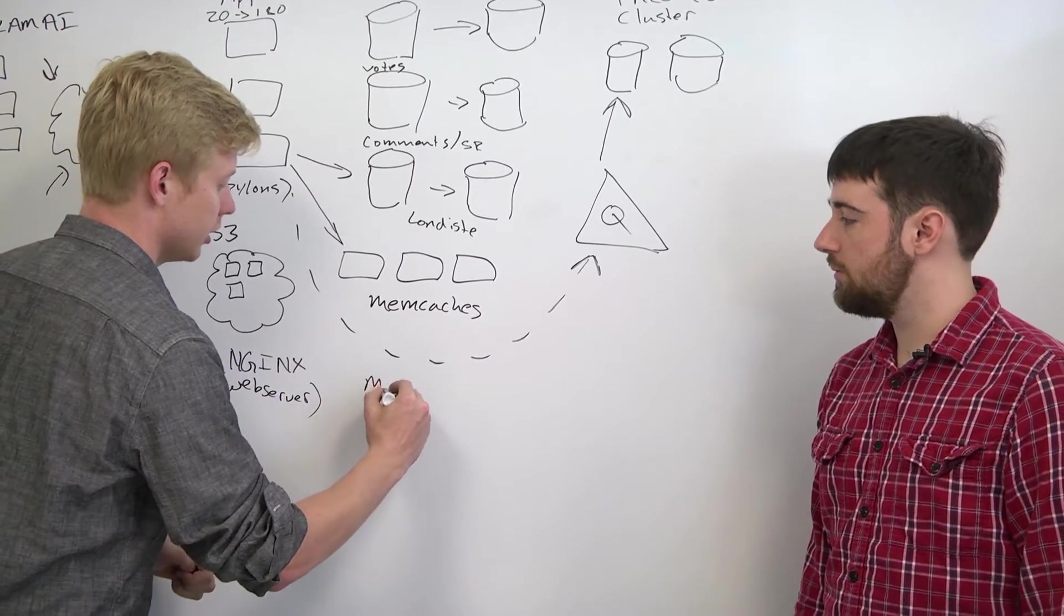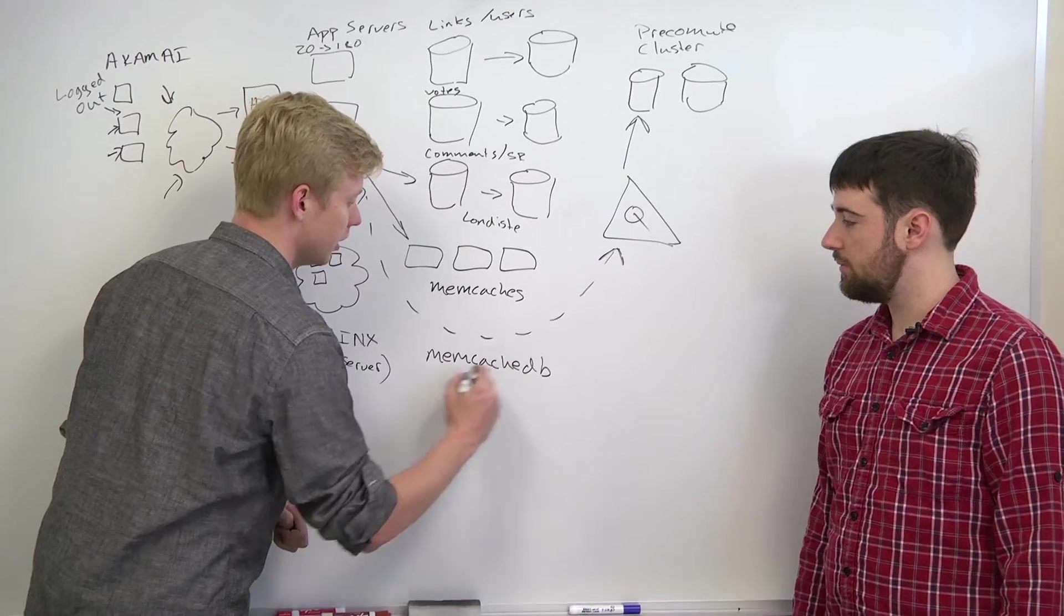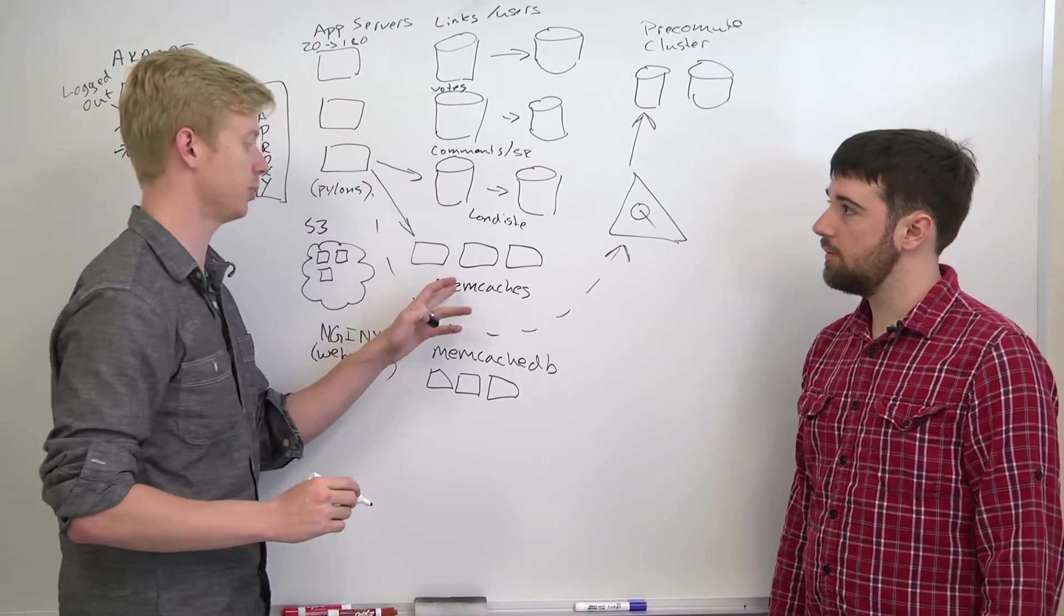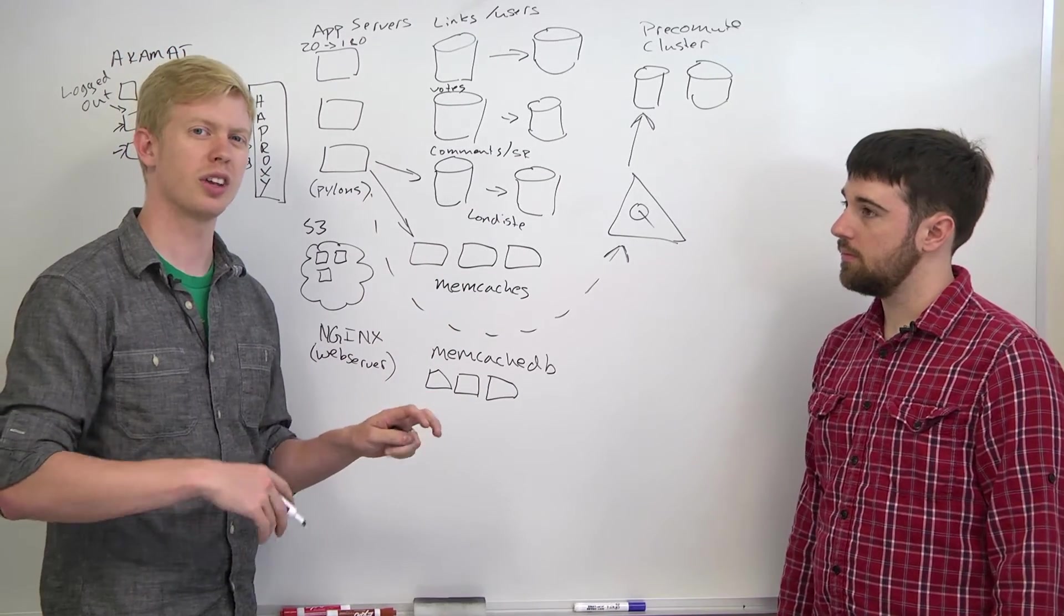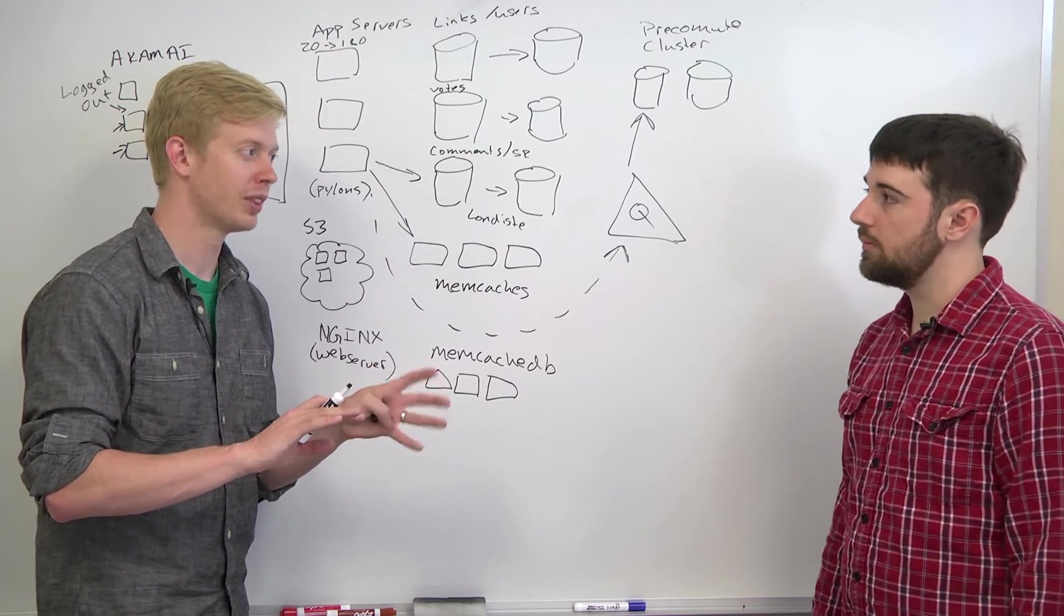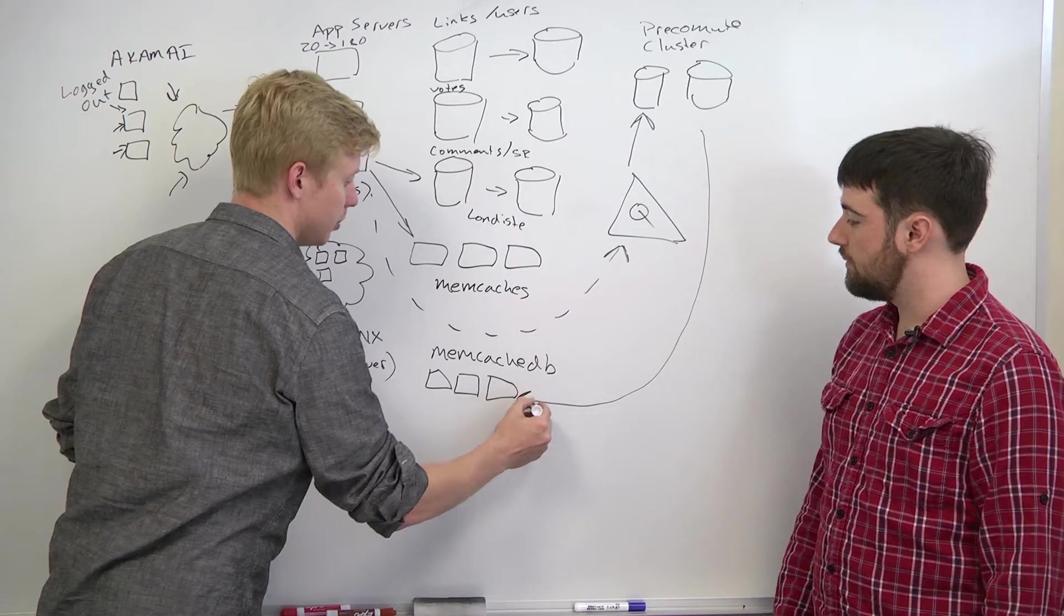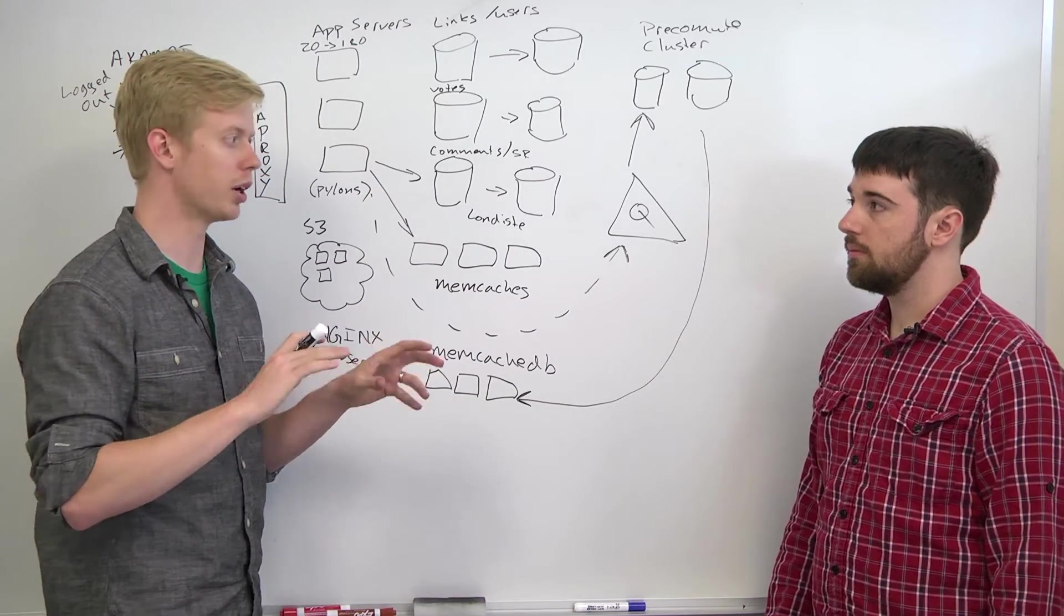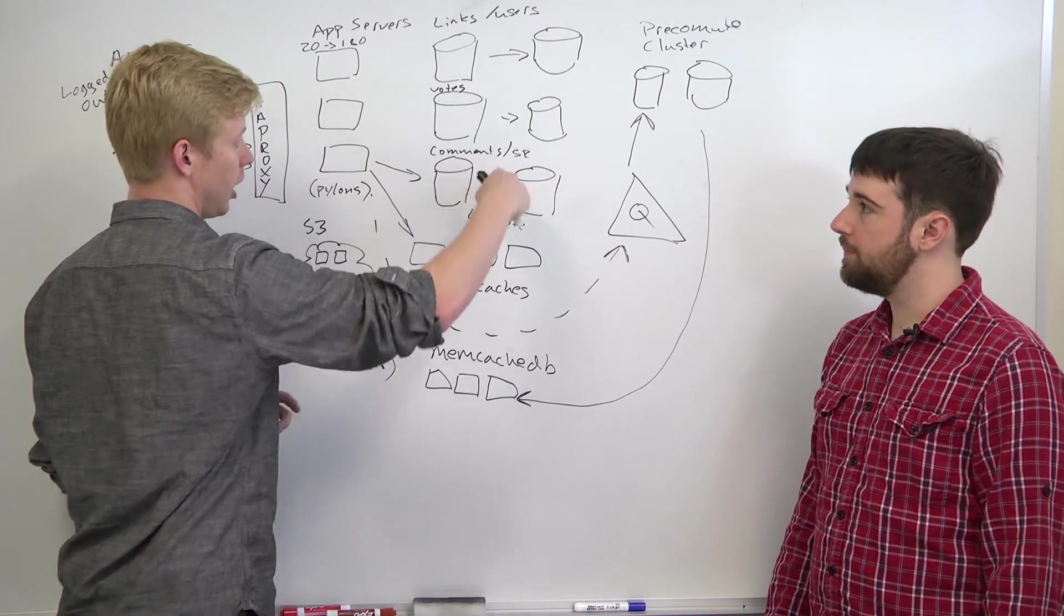And we had a separate set of memcaches that were actually running a technology called memcachedb. And memcachedb is just like memcached, but instead of being totally in memory, it had a little disk data store. So it was kind of fast like memcached because it was mostly in memory, but also would persist. Data that got pre-computed would be put in memcachedb as kind of this middle layer cache so we can avoid running queries on these databases.